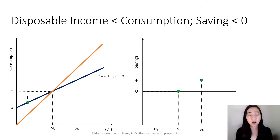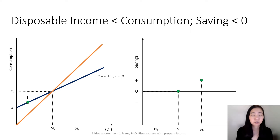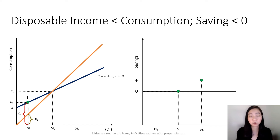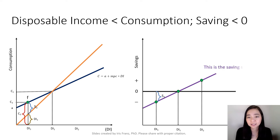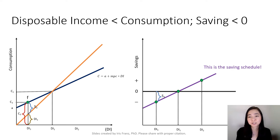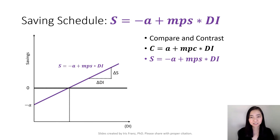Now, what happens if you are at point F? F is on the consumption schedule at the left-hand side of the 45-degree line. So you know that your consumption, C3, is greater than your disposable income, DI3. Therefore, you are dis-saving, and your saving is equal to negative S3. On the right-hand side, you find the point and connect the three points to get your savings schedule. So when your disposable income is DI3, your saving is negative.